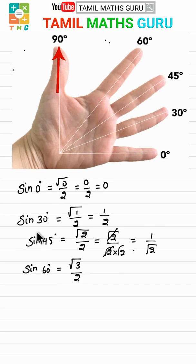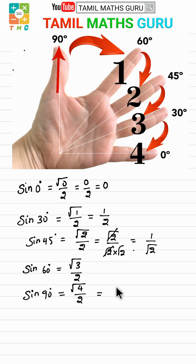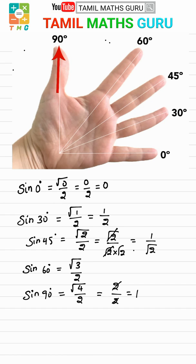For sin 90, there are 4 fingers below, so square root of 4 by 2. Square root of 4 is 2, so 2 by 2 equals 1. Sin 90 value is 1. Using this trick, we write down the square root of fingers below divided by 2 and substitute the angle values to find the sine.